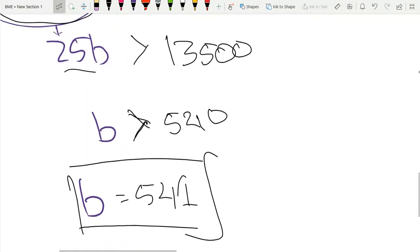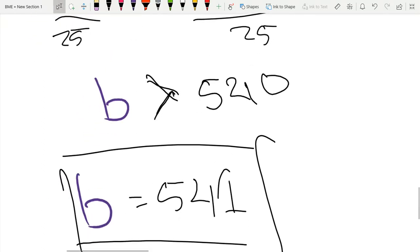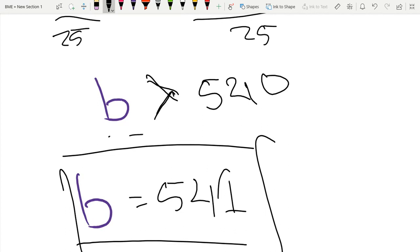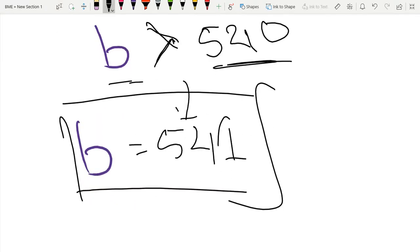Now we just divided this by 25 to get B is greater than 540. This would mean that we have to sell more than 540 burgers to break even. So that would be 541 burgers.